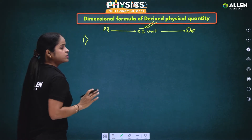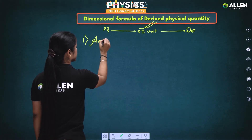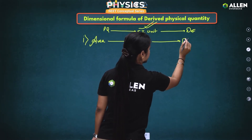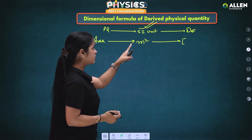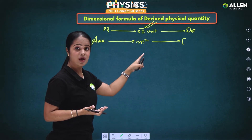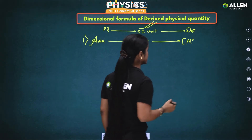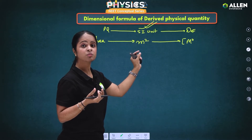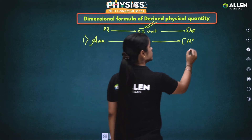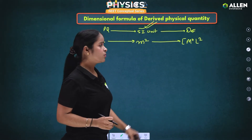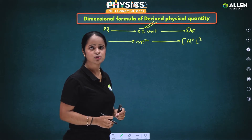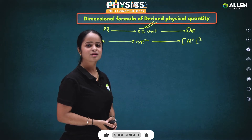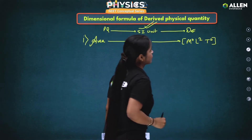The first example is area, which is a derived physical quantity. The SI unit of area is meter square. For the dimensional formula: there is no kg term, so we write M to the power 0. We have meter square, and meter is represented by capital L in dimensional formula, so we write L to the power 2. There is no time term, so we write T to the power 0. Therefore the dimensional formula of area is M⁰L²T⁰.